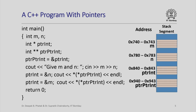Let us see how the memory layout for this program would be. We have two integer variables and each integer requires 32 bits for its storage, so we need 4 bytes or 4 locations in main memory for each integer. Here is our stack segment where all local variables are stored. These 4 locations are reserved for variable m, and similarly for n, which is also an integer, we have 4 locations. I am writing all the addresses in hexadecimal.